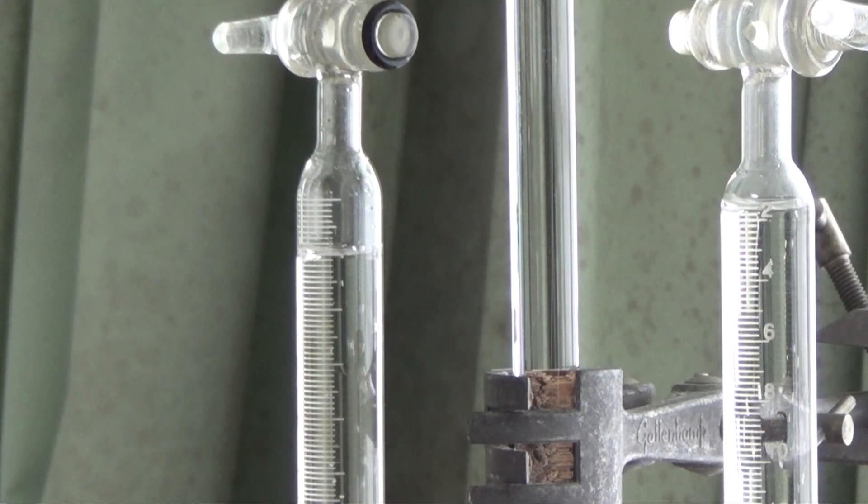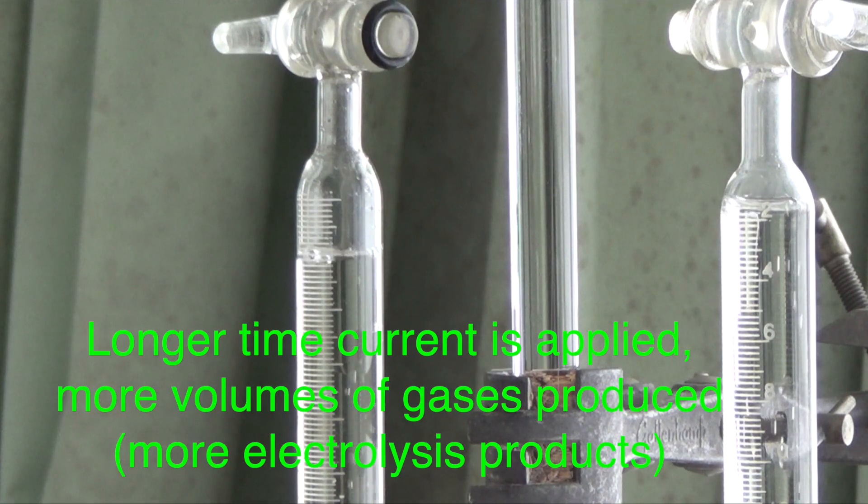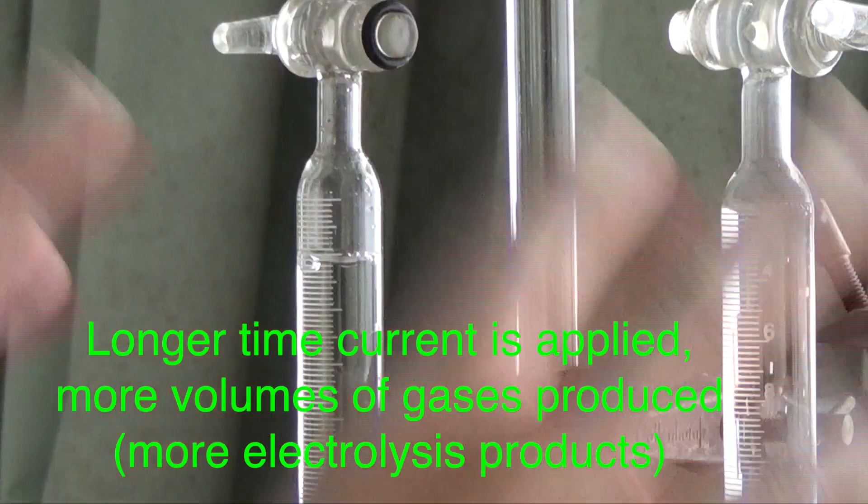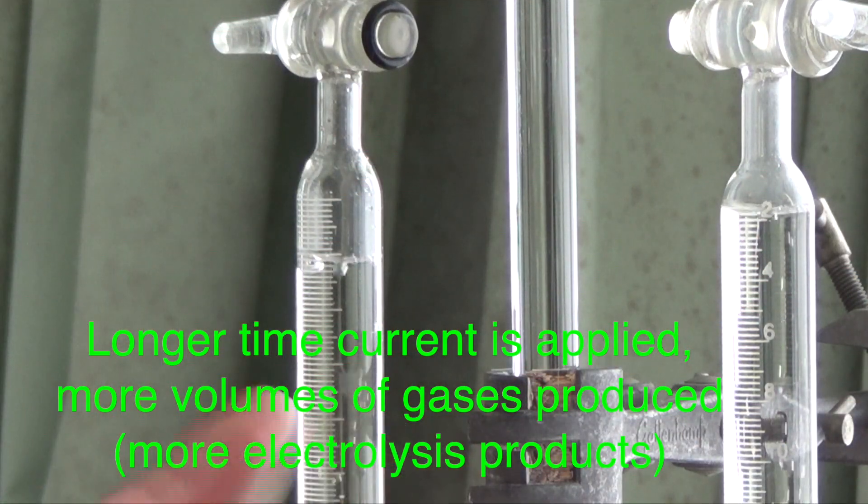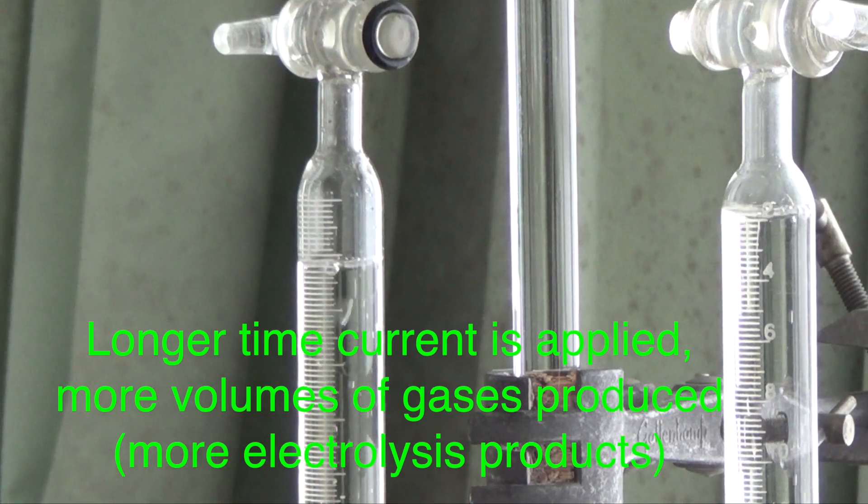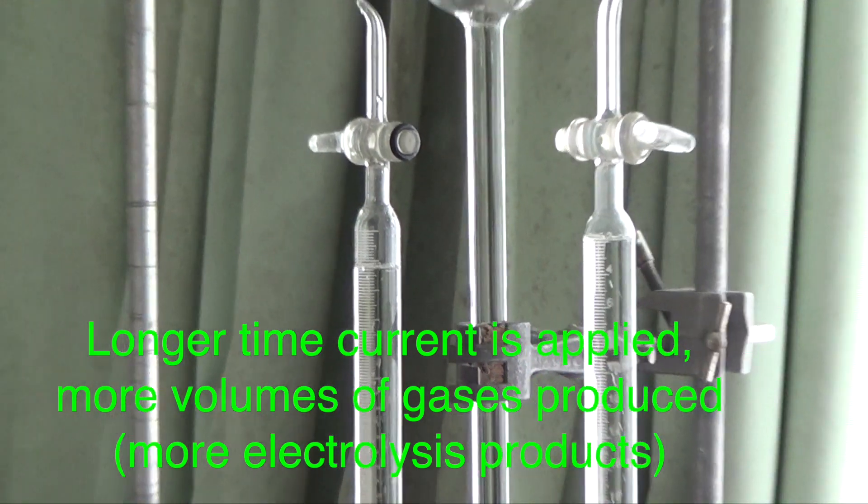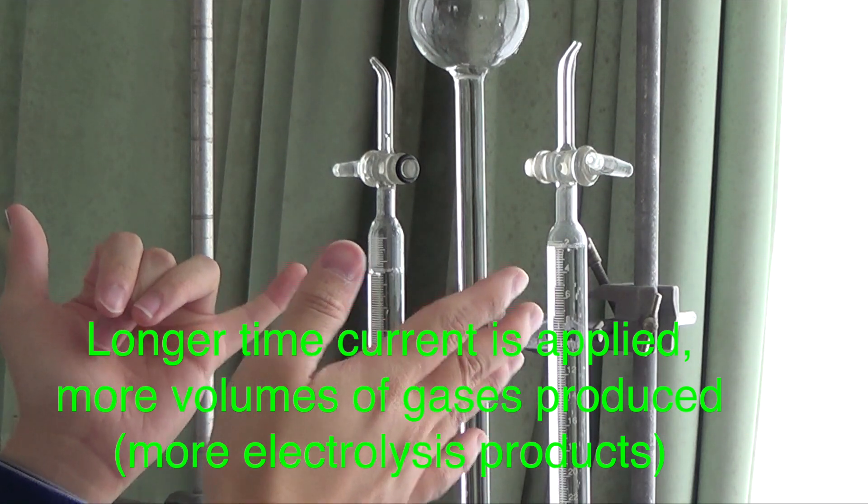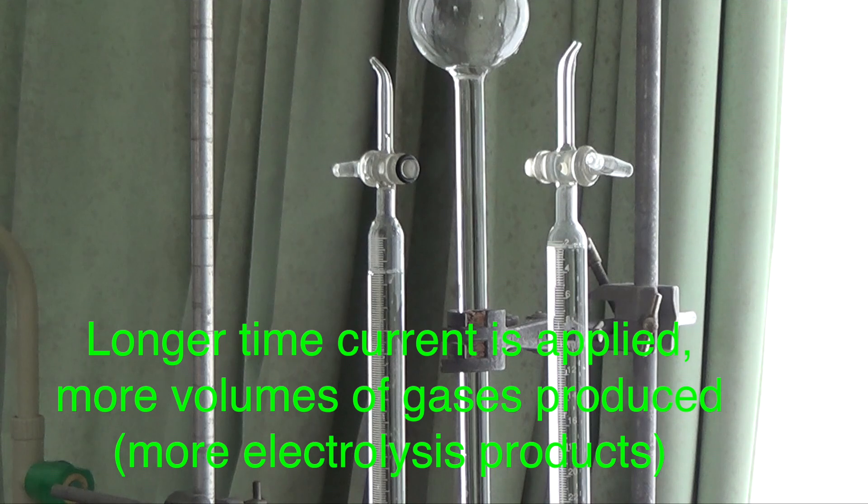How about if we record the time? The longer the time that you allow this to continue, the more products you will collect. So the amount of product that you get from electrolysis is a result of time. The longer time you allow the electrical current to flow through, the greater is the total charge of electricity that passes through, and therefore you get more volumes of product because you get more electrolysis happening.